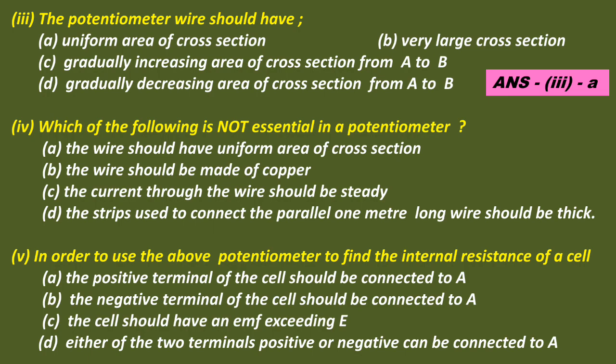Question 4: Which of the following is not essential in a potentiometer? Option A: the wire should have uniform area of cross section. Option B: the wire should be made of copper. Option C: the correct current through the wire should be steady. Option D: the strips used to connect the parallel 1-meter long wire should be thick. The correct answer is B — the wire should be made of copper.